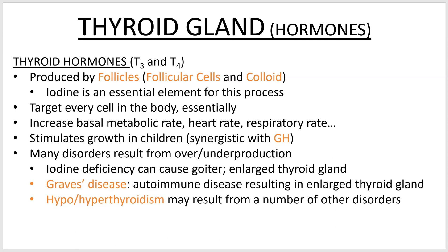People who are iodine deficient can develop an enlarged thyroid gland called a goiter. That's due to the fact that the thyroid is getting bigger and bigger trying to catch more iodine, which isn't really there if you're deficient in it. These hormones increase metabolic rate, heart rate, and respiratory rate — basically they just up your metabolic rate and all the things that go along with that. They can also stimulate growth synergistically with growth hormone in children.